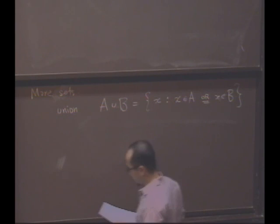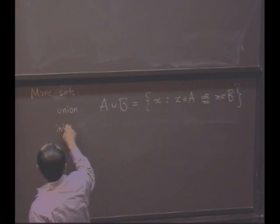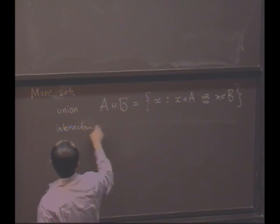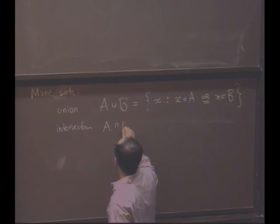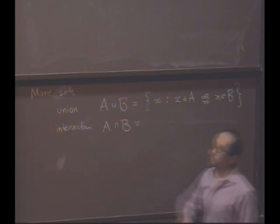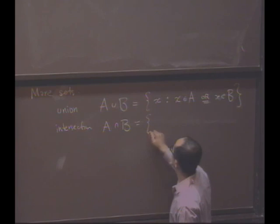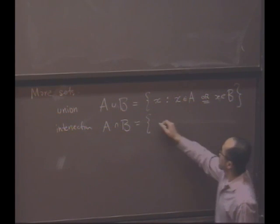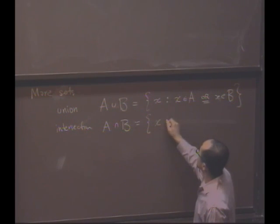Here's an associated notion, the intersection, which is written with an upside-down cup in between A and B. It's the same definition except or becomes and.